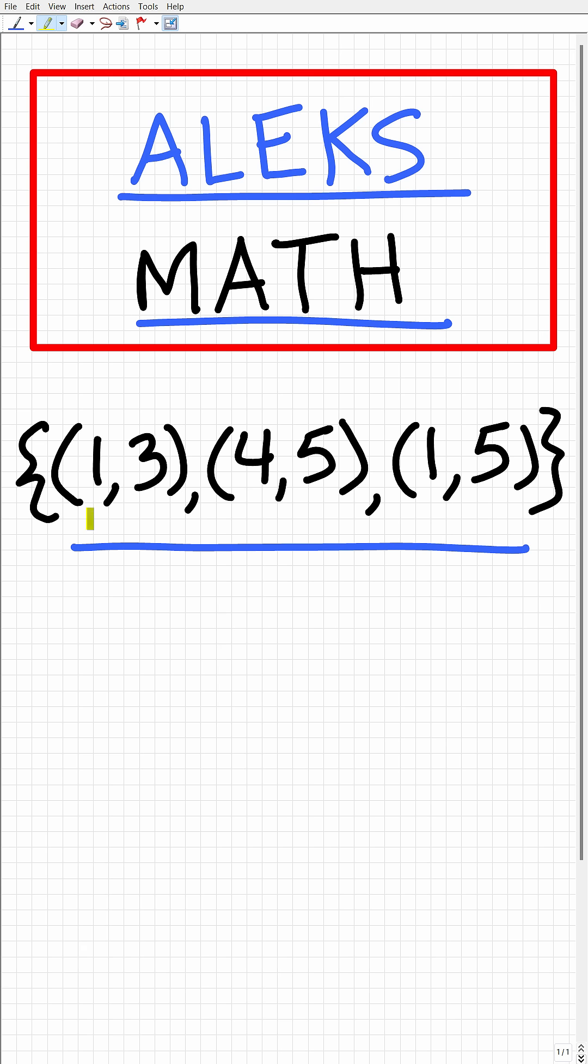So we have a set of three points or a set of three XY coordinates. Each of these is an XY ordered pair. In other words, we could graph these three points. But the question, in fact, is: is this a function? Does this set of ordered pairs represent a function?